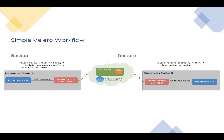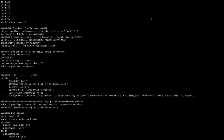In the same way, for restore, the Velero client requests a restore call. In this case, the Velero restore controller — rather than the backup controller — makes a call to the storage provider, authenticates with that storage provider, and then restores the backup to the Kubernetes cluster with the help of the Kubernetes API server.